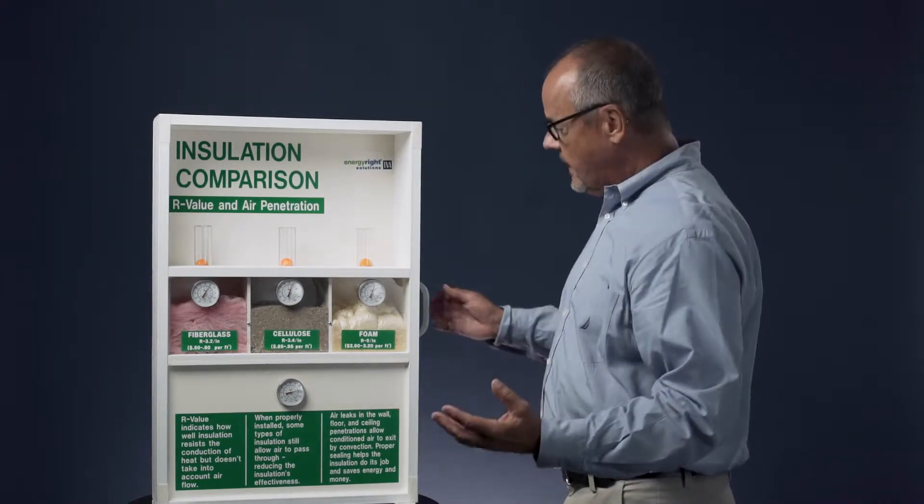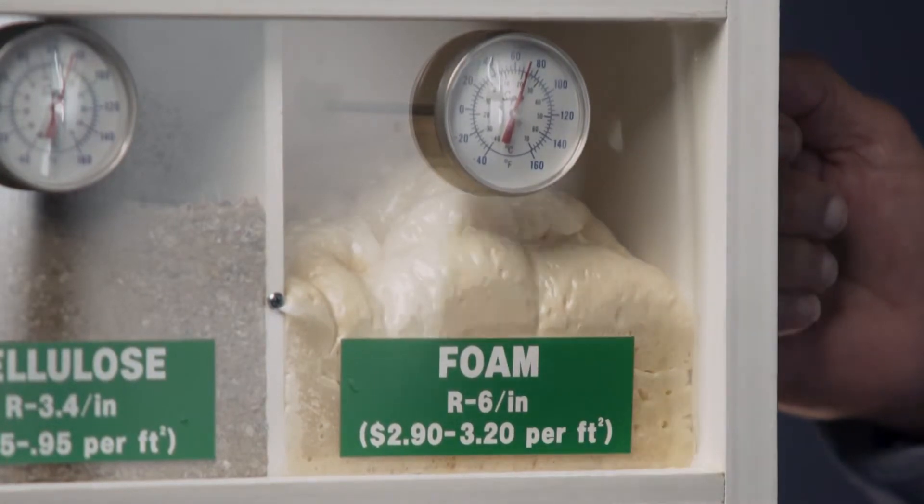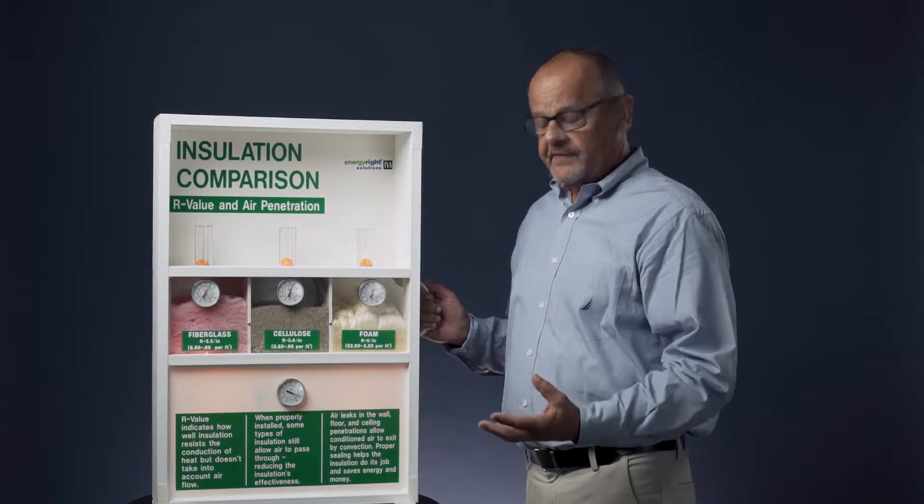So let's talk about the three types of insulation. First I'll start with the foam insulation here. It's an R6 per inch. The higher the R value, the more effective it is.